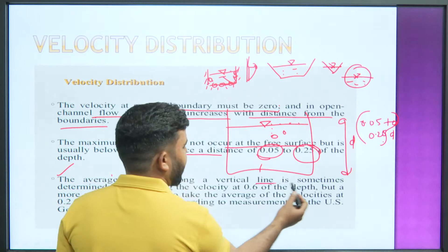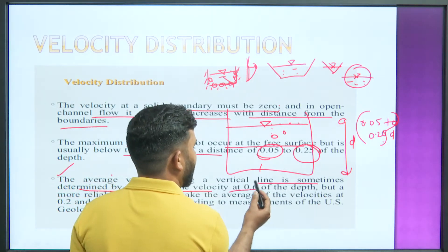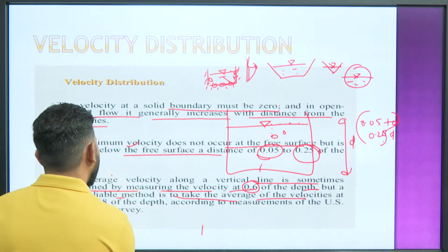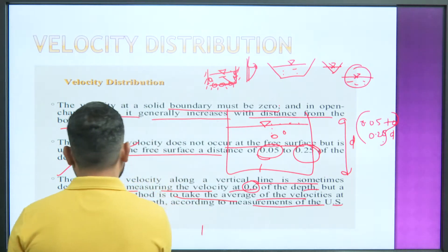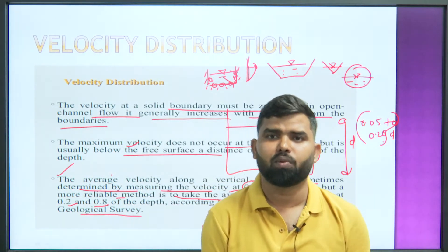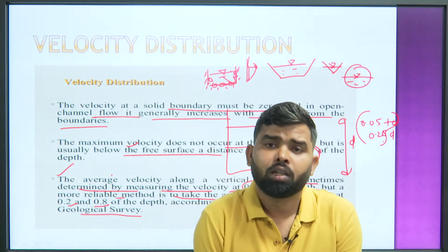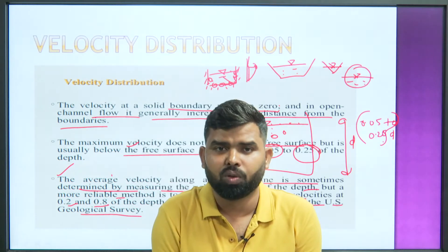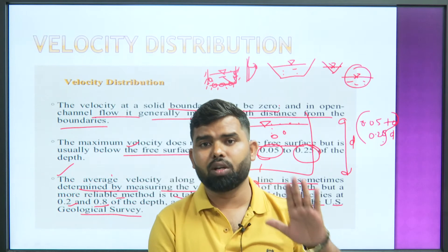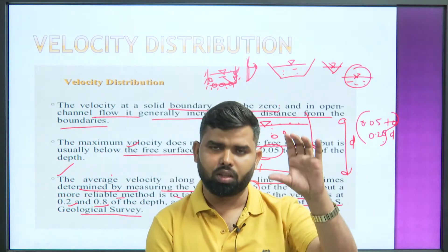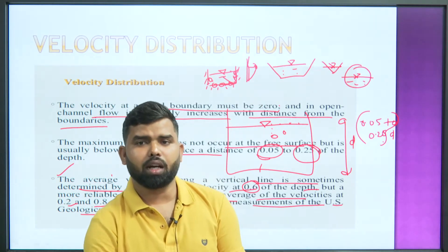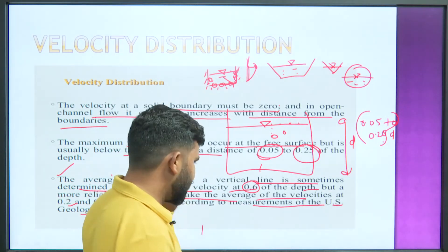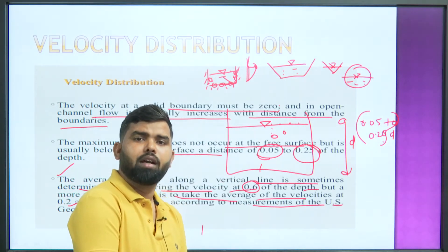The average velocity along the vertical line is sometimes determined by measuring the velocity at 0.6 of the depth. A more reliable method is to take the average of velocity at 0.2 to 0.8 of the depth, according to the measurement of the US Geological Survey. Every country has its own survey; based on atmospheric conditions, studies have been done. The US Geological Survey stated that average velocity is found between 0.2 to 0.8 times the depth.